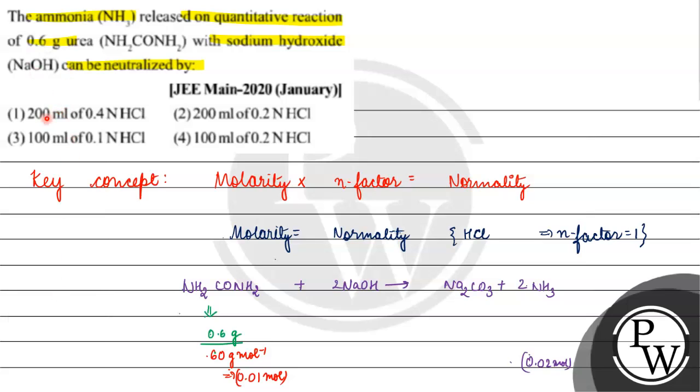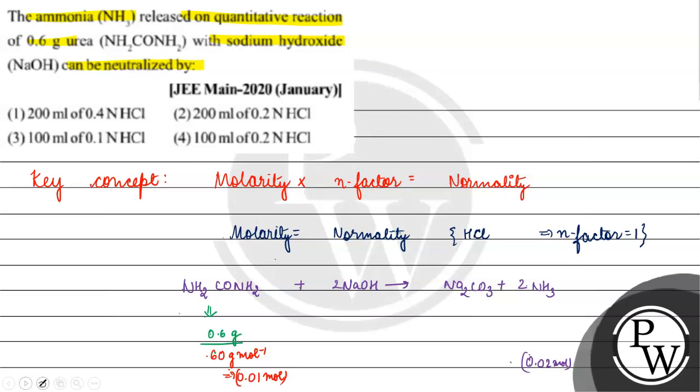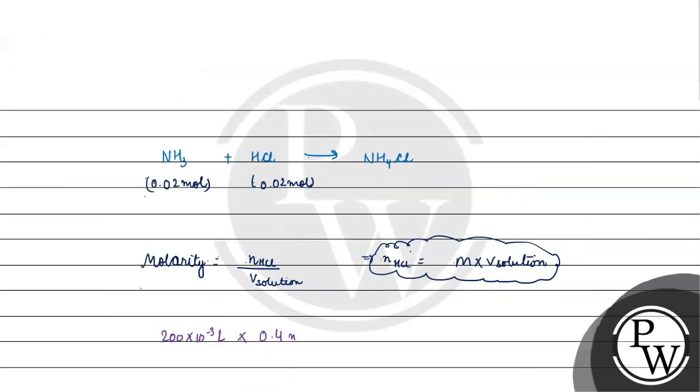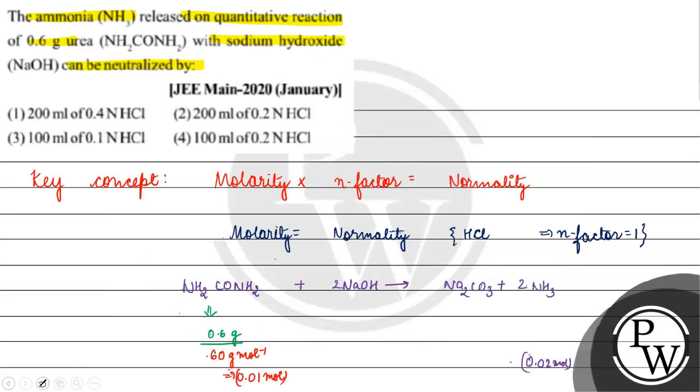Coming back to the question, checking the first option: 200 ml equals 200 × 10^-3 liters times 0.4 mol per liter, which gives 0.2 × 0.4 = 0.08 moles. We need 0.02 moles, so option A is incorrect.